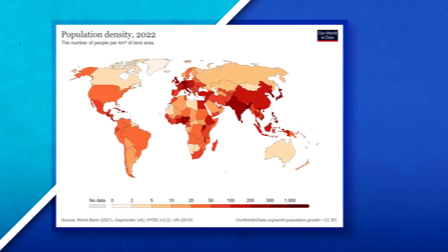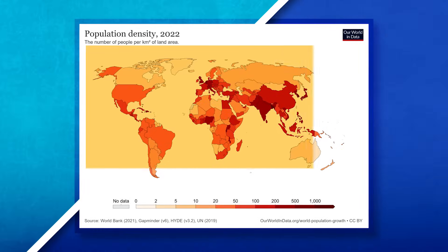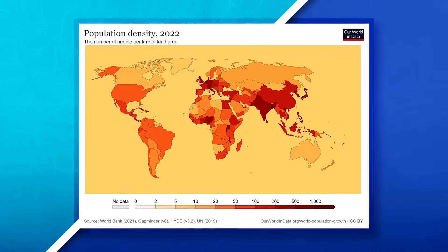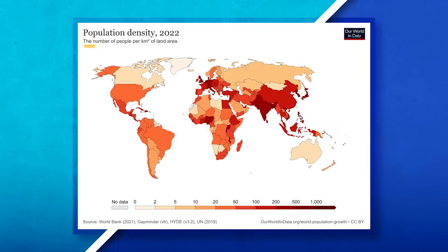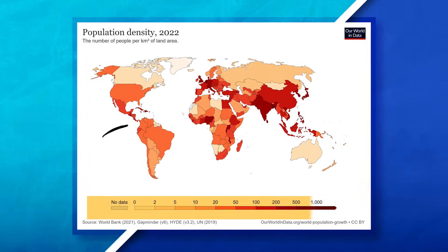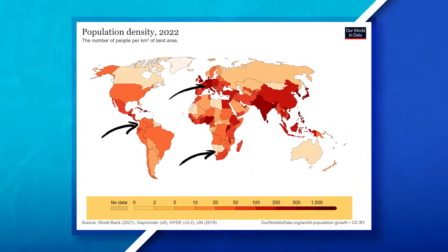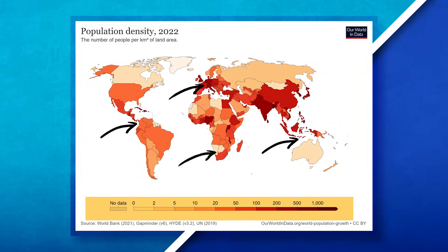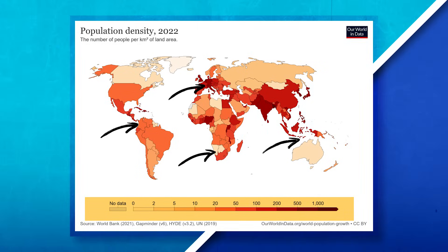For example, here you can see a map where our scale is global — we're looking at the entire world. However, notice the scale of analysis is actually national, because the data being presented is specific to each state. Notice how the country's boundaries are relevant to the data; everything is being organized by the state. So the scale of the map is global, but the scale of analysis is national.